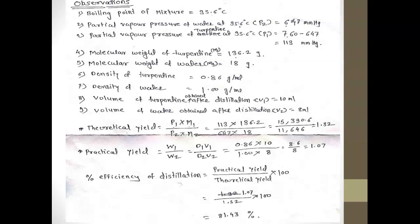The first observation is the boiling point of the mixture, which is 95.6°C. The boiling point of pure water is 100°C and the boiling point of pure turpentine is 160°C. However, when water and turpentine are mixed, the boiling point gets depressed to 95.6°C. The partial vapor pressure of water at 95.6°C is 647 mmHg, denoted as P2.